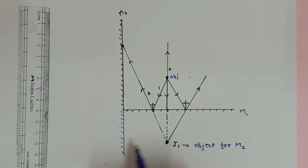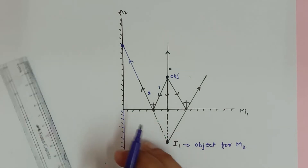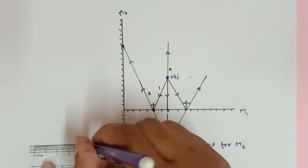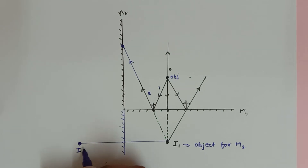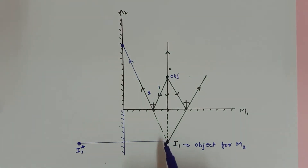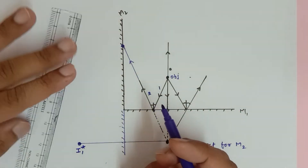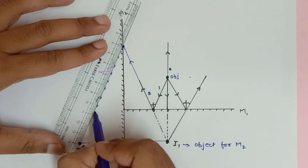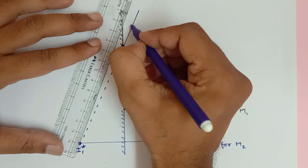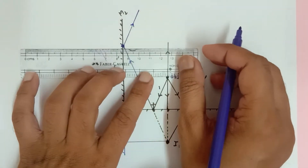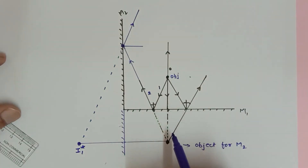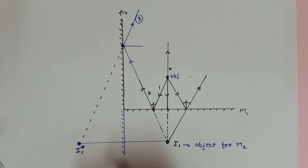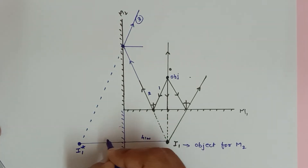Since I1 is the object for M2, its image would be formed somewhere behind M2. This distance is four centimeters, so at four centimeters behind I should get my image — I am going to call it I1-star. The incident ray comes from the object I1, this is the reflected ray, and if you extend the reflected ray backwards you get the image. The same distance applies: four centimeters object distance means four centimeters image distance behind the mirror.